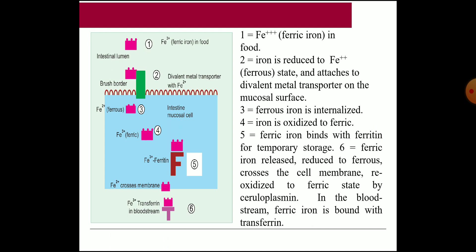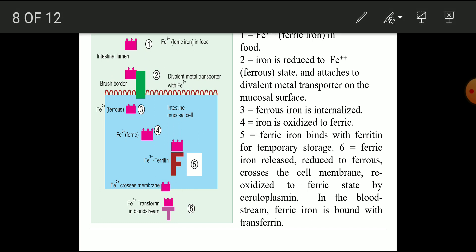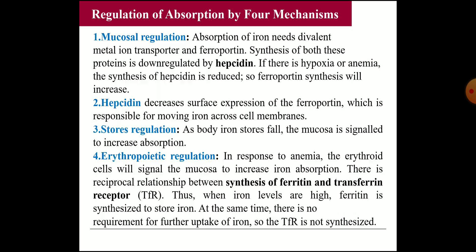In the diagram, you can see that in food iron is in the ferric form, then it is reduced to ferrous, and the divalent metal transporter (DMT1) spanning the brush border transports it into the mucosal cell. Inside the cell it is again converted to ferric and combines with apoferritin to form ferritin. Whenever iron is required, ferric is converted to ferrous and released through ferroportin, combines with apotransferrin to form transferrin, and is transported through the blood. You should draw this diagram and explain it when asked about iron absorption.